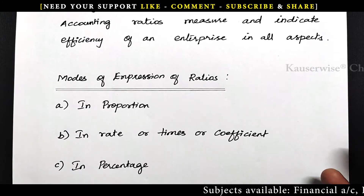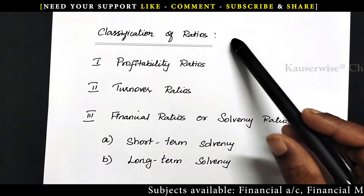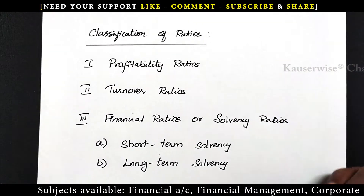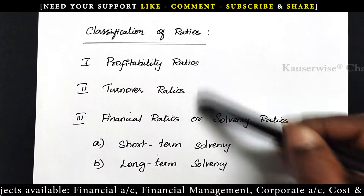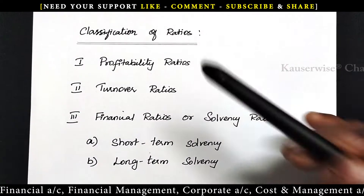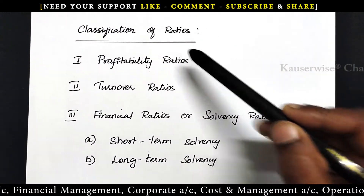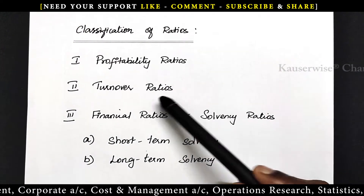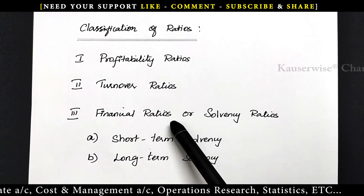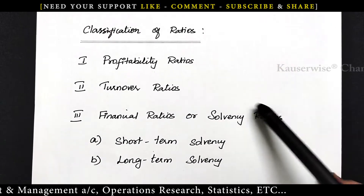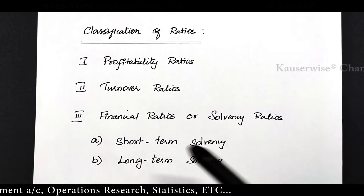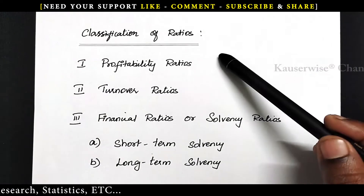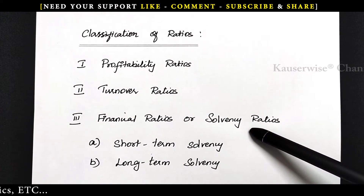Now let us see the different classifications of ratio analysis. Ratios are classified into several ways; different approaches are used for classifying ratios. Here I have classified the ratios based on functions and purpose. Based on purpose and functions, ratios are classified into three categories: profitability ratios, turnover ratios, and financial ratios or solvency ratios. The solvency ratio is again classified into two categories: short-term solvency and long-term solvency.